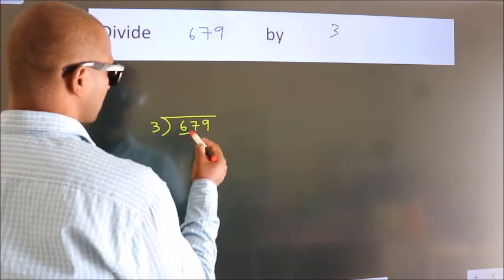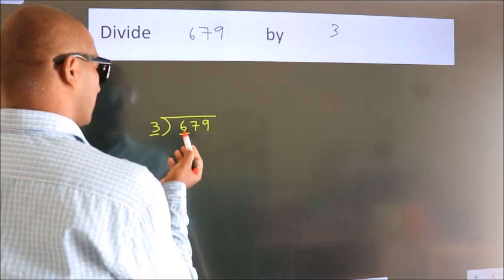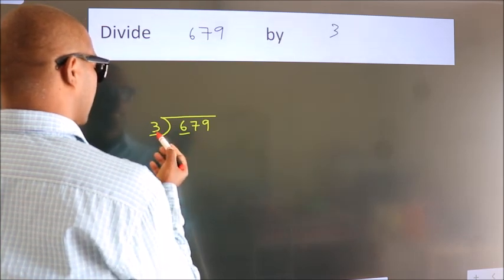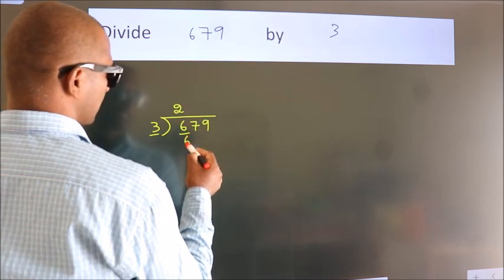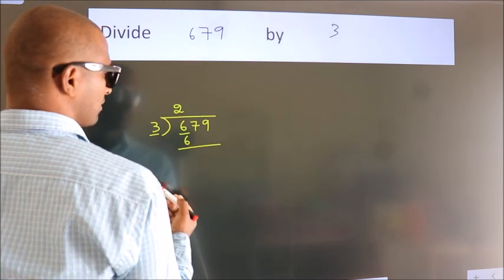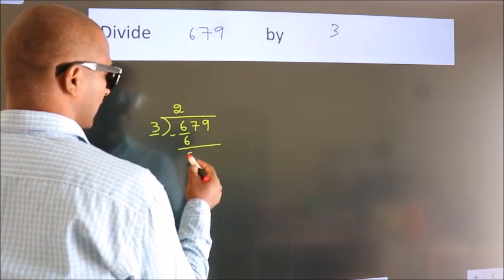Here we have 6. Here 3. When do we get 6? In 3 table. 3 2s, 6. Now we should subtract. We get 0.